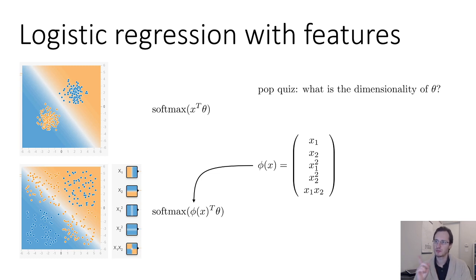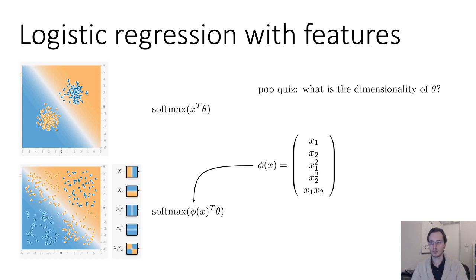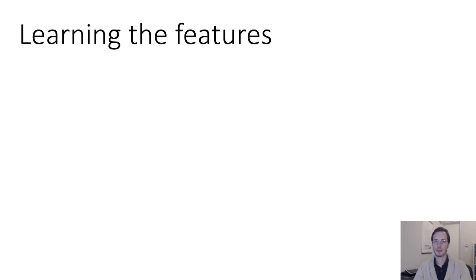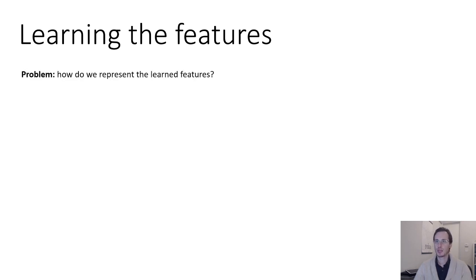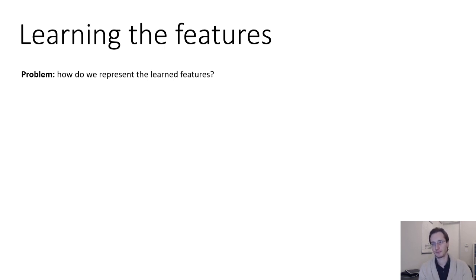With this feature vector containing five features and two classes, theta would be 2×5 (or 2×6 with a bias term). But we'd like to learn the features instead of specifying them manually — we want a representation for features that we could learn with gradient descent. We need some representation we can optimize.